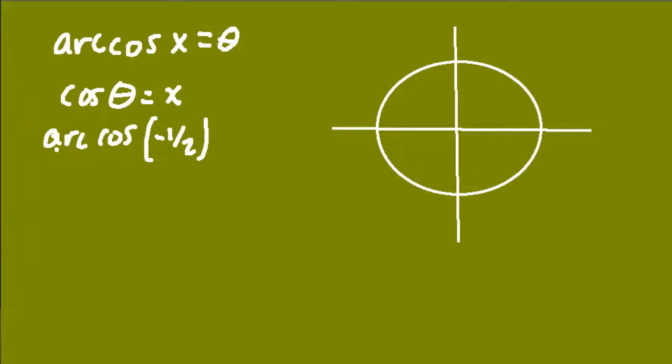Now, the value of negative 1 half refers to our x direction. So this distance right here is going to be negative 1 half. And that'll bring us up to this point over here, and we have our triangle. We know this hypotenuse is 1, so if we use the Pythagorean theorem to find this side, we'll find out that it's radical 3 over 2.